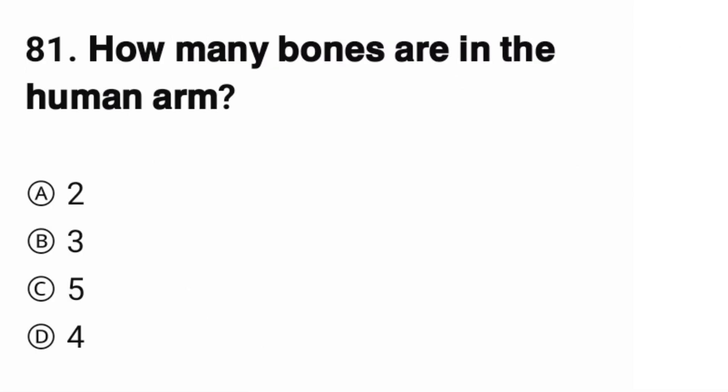Question number 81. How many bones are in the human arm? The correct option is B, three.